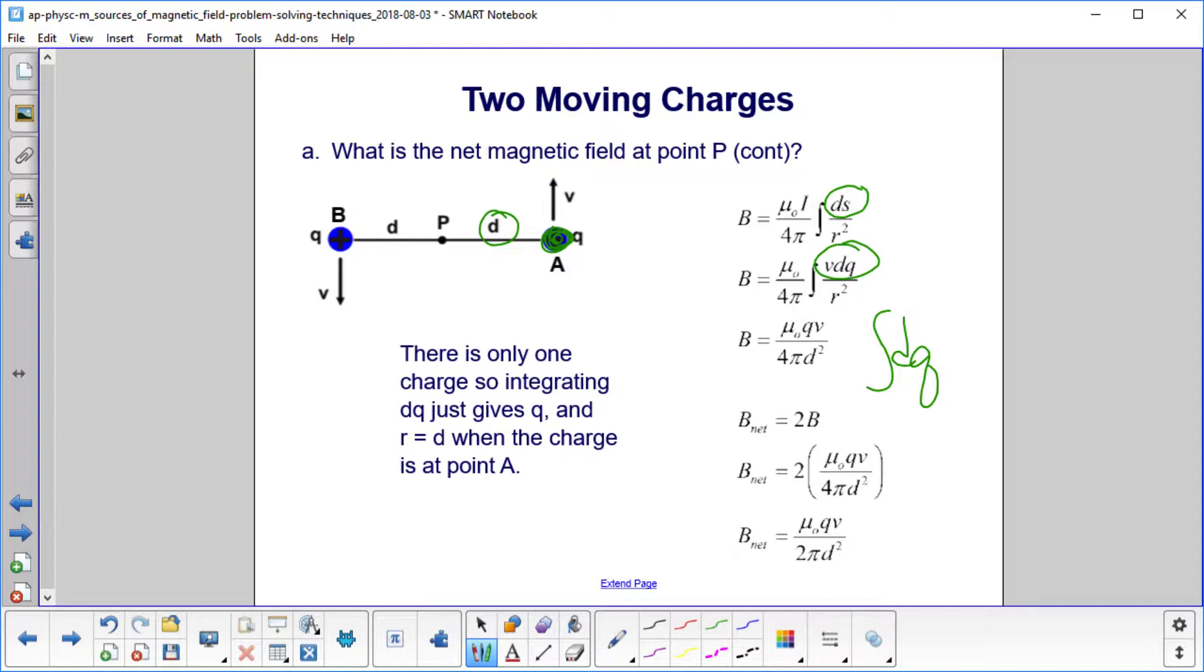So that comes outside the integral. And then when we integrate dQ, well, we only have one charge. That's little Q. So we just go ahead and substitute that in for the integral. So we have mu zero QV over 4 pi d squared.